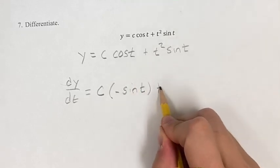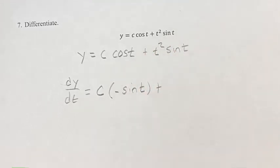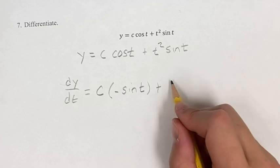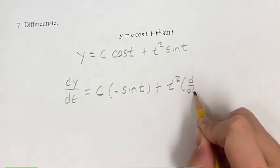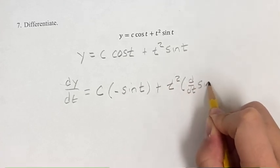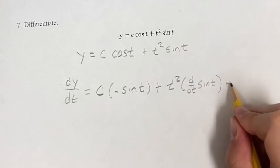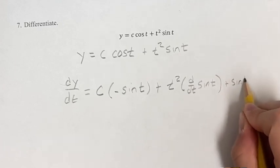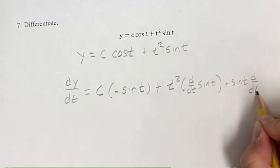This can be added to the derivative of this term, and we're going to have to use the product rule. So we're going to have the first times the derivative of the second, plus the second times the derivative of the first.